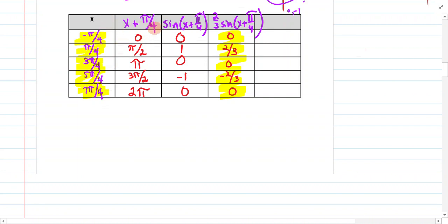So here we're going to add pi over 4 to this. We get to 0, we get to pi over 2, pi, 3 pi over 2, and 2 pi. Those should look familiar. We've seen them over and over again.